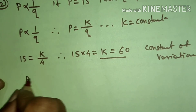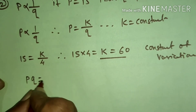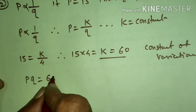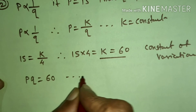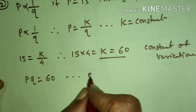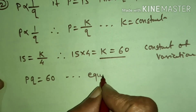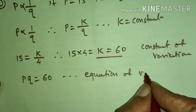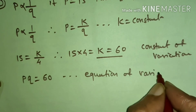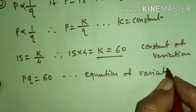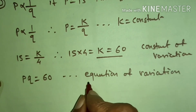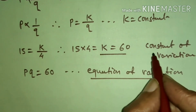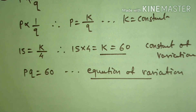The equation of variation is P into Q is equal to 60. This is the equation of variation, and K equal to 60 is the constant of variation.